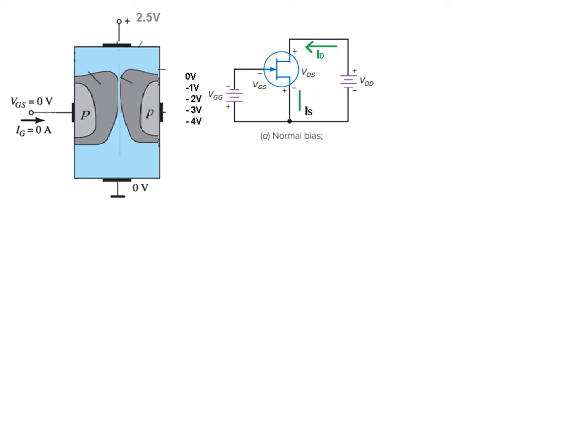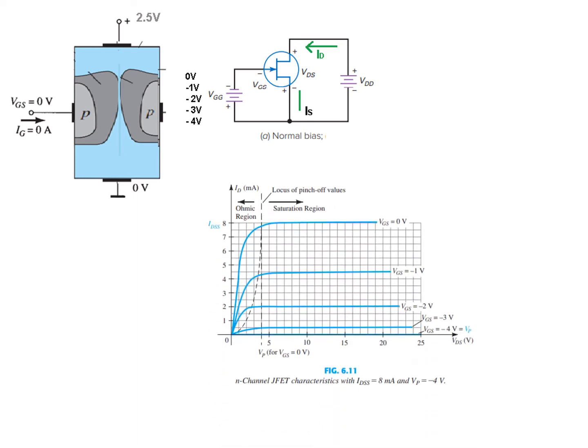Applying different voltages at the gate — 0, -1, -2, -3, etc. — we can plot different curves and find different values of ID. This curve is for VGS = 0, this is for VGS = -1, and similarly for other voltages. As we increase the negative voltage, the reverse bias increases. As the reverse bias increases, the pinch-off effect takes place earlier. When it was 0V, the current was going up to 8 milliamperes, but when it was -1V, the current goes only up to about 4 to 4.5 milliamperes, and it reduces as we increase the negative gate voltage.